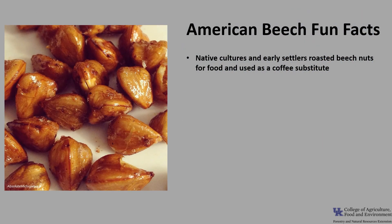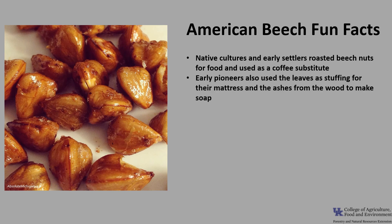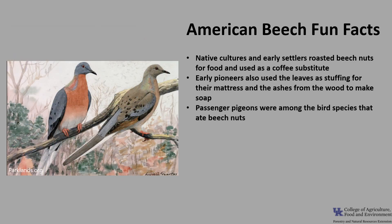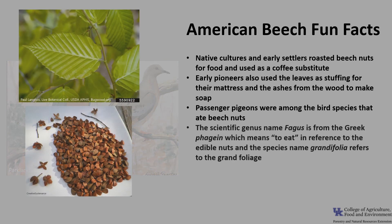Now for a few fun facts about American beech. Native cultures and early pioneers roasted and ate beech nuts and also used them to make a coffee substitute. Pioneers used beech leaves to stuff their mattresses, and beech ashes were used to make soap. Passenger pigeons, before their extinction, were among those species that ate beech nuts. The pigeons were known to converge upon beech groves in such large numbers that their weight would frequently break large limbs. The scientific genus name Fagus is from the Greek phagion, which means to eat, in reference to the edible nuts, and the species name grandifolia refers to the grand foliage.